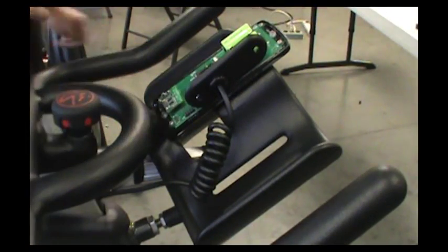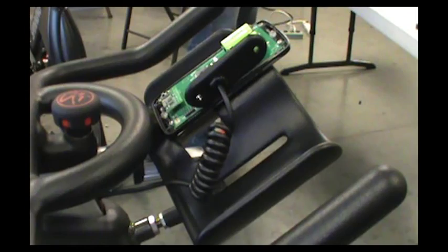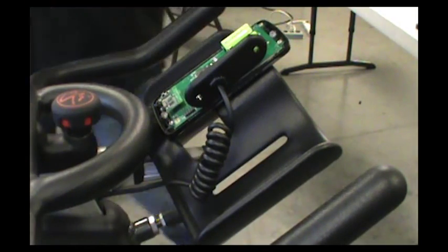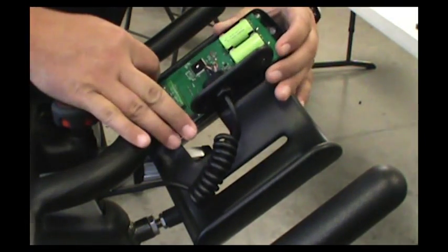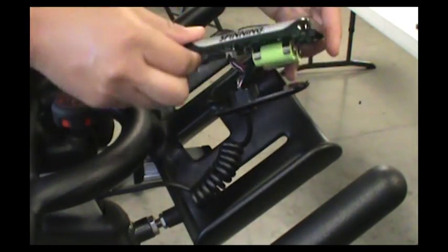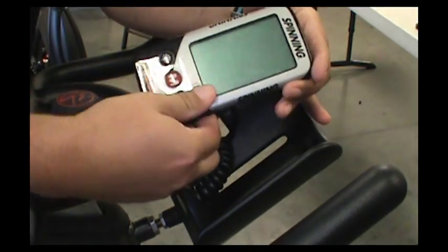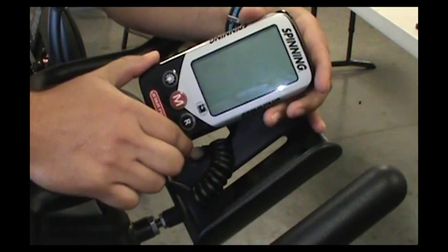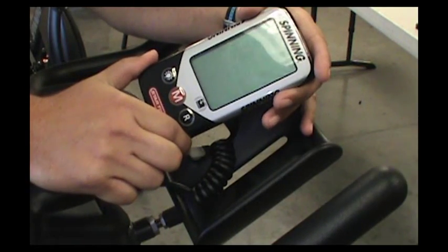So now that we've done our upload, we want to just double-check and make sure that the software change has happened. In order to do that, we're going to need a magnet. That's going to allow us to get into the maintenance mode, and then we're going to start pedaling.